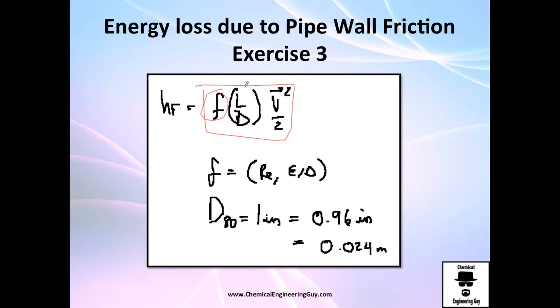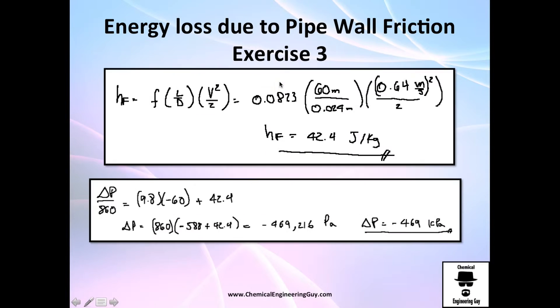But don't forget that we must calculate the energy loss, not the friction factor per se. So we got this right here. Let us substitute everything. We got this, we got the length which is 60 meters, the diameter which is 0.024 meters, and the velocity squared divided by 2. You get this number right here: 42.4 joules per kilogram. And I just want to let you compare it with exercise number two, the previous video. In the previous video we got something very very small, something about 0.03 joules per kilogram which is literally nothing. And in this case because we have a very high pressure drop, we have it right here, it's very high.